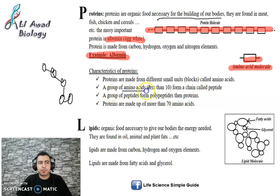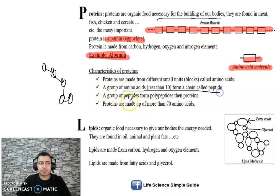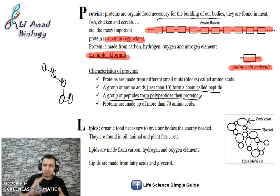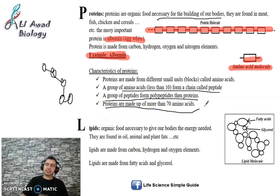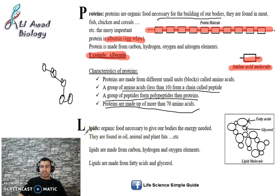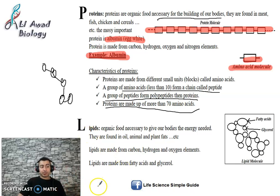A group of amino acids fewer than ten forms a peptide. A group of peptides forms a polypeptide. A polypeptide is larger than a peptide. When there are more than seventy amino acids that take a specific three-dimensional shape, they are called a protein. In the next video I'm going to talk about lipids and begin the first activity in detail.